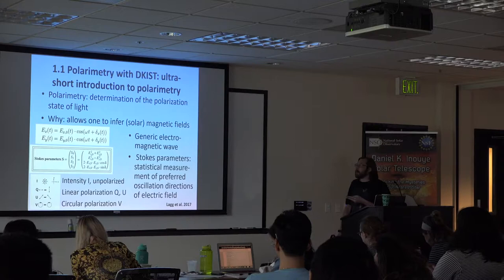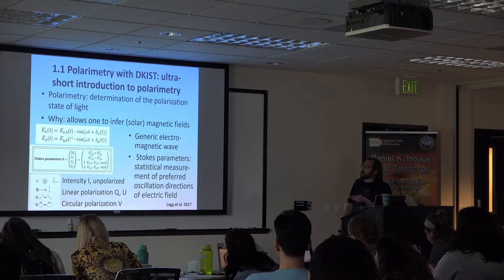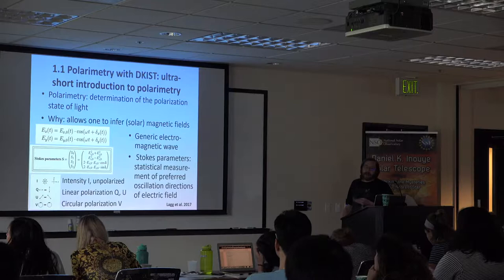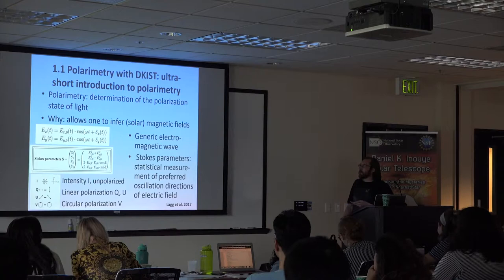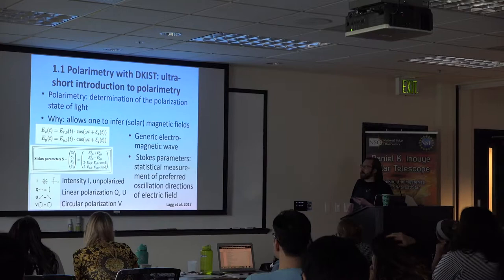If you want to derive it yourself, it's halfway easy. You start with a generic electromagnetic wave — oscillation propagating along the z-axis, oscillating in X and Y of the electric field. You have what is called the propagator, which has the frequency and a phase. With relatively short computation, you can get rid of the temporal dependence and end up with what is called the Stokes parameters.